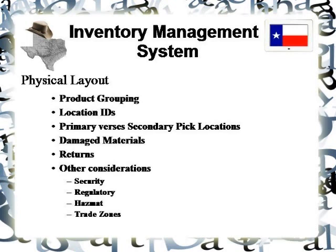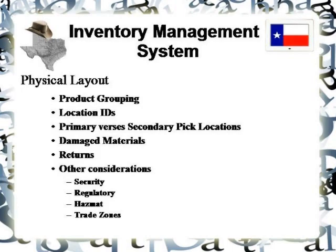The list of considerations goes on — for example, security. I mentioned firearms earlier; you'll need a restricted space or lockdown access. There may be regulatory requirements such as hazmat with regard to hazardous materials, and there may be issues with foreign trade zones. With CTPAT, there are requirements as to where inventory is held and where it is not held, meaning accessibility to customs officers.